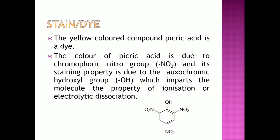The yellow color compound picric acid is a dye. The color of picric acid is due to the chromophoric nitro group, and its staining property is due to the oxochromic hydroxyl group, which imparts to the molecule the property of ionization or electrolytic dissociation.